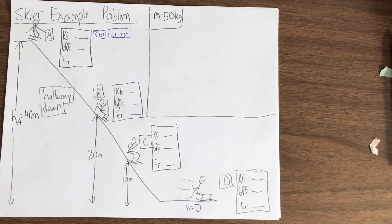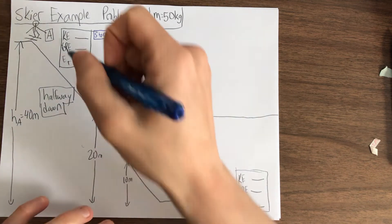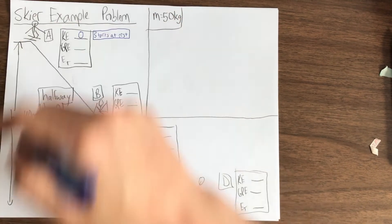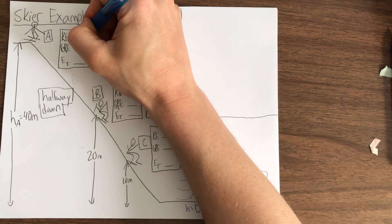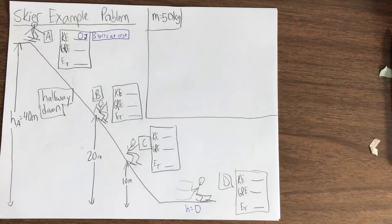Alright, so I hope you're back now and we could start with position A, where the skier does start at rest, so what could we say about that? It means they have no speed, and if they have no speed, then they have no kinetic energy. So when something starts at rest, it has zero joules of kinetic energy. Okay, so that's one blank we could fill in.